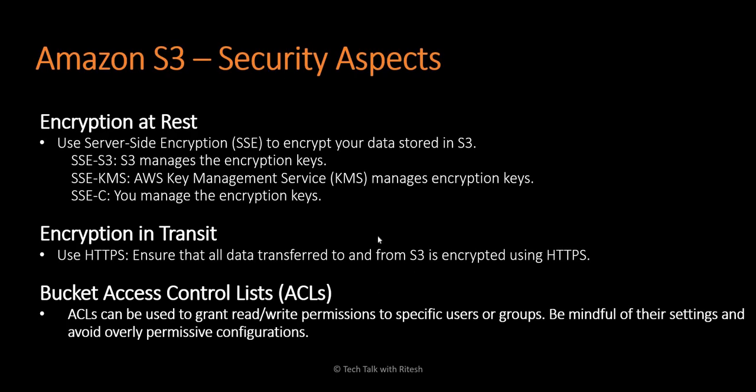For encryption at rest, we have these options available: server-side encryption by S3, S3 will manage the encryption key via KMS — Key Management Service, which is another encryption service I will cover — or the client can manage the encryption keys themselves. That option is also available. For encryption in transit, we can use the HTTPS protocol. Over port 443, the transfer of information is secured. We can also use bucket Access Control Lists — ACLs — to grant read or write permissions.